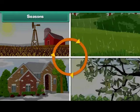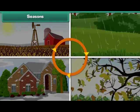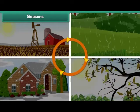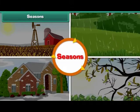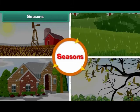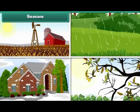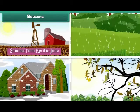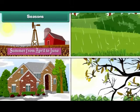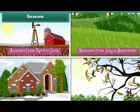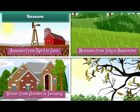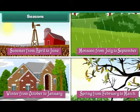The weather changes in cycles and these cycles are called seasons. There are four main seasons in a year. They are summer from April to June, monsoon from July to September, winter from October to January, and spring from February to March.